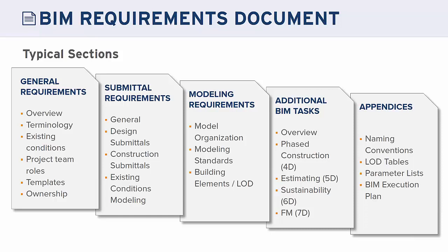The additional BIM tasks section defines what other BIM tasks you'd want on a per-project basis, since every project is unique. This could include 4D, 5D, 6D, or 7D work — construction sequencing, bill of materials takeoffs, LEED documentation, and so on. The appendices section is where you put the large tables that are too lengthy to include in the main body.